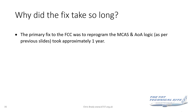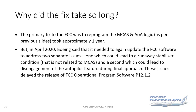The primary fix to the flight control computer — reprogramming MCAS and the alpha logic — took around about a year. But in April, Boeing said it would need to update the FCC software to address two separate issues: one that could lead to a runaway stab (not MCAS related), and one that could lead to disengagement of the autopilot during final approach. These issues delayed the release. Boeing found that a single FCC was not up to the job, and had to work out a way of getting the two FCCs to talk to each other — that was the real time-consuming part.